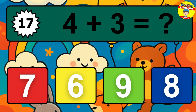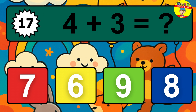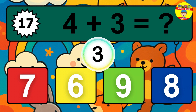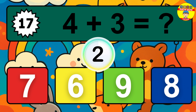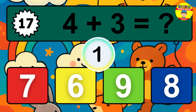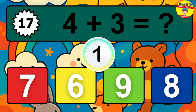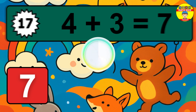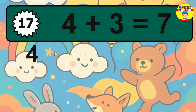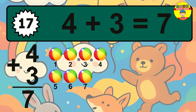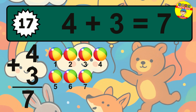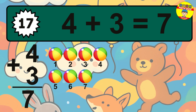Question 17. 4 plus 3 equals what? The answer is 4 plus 3 is 7. Let's count it.